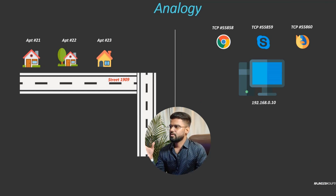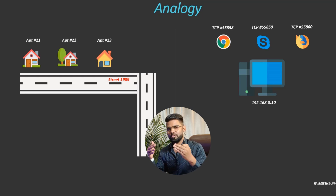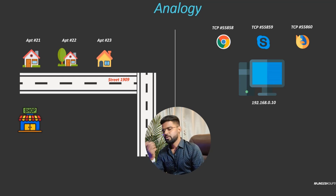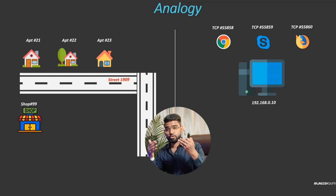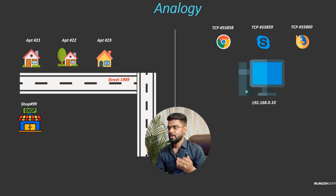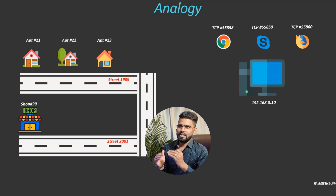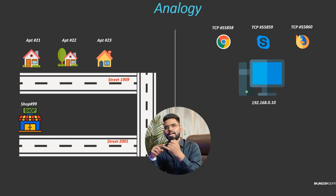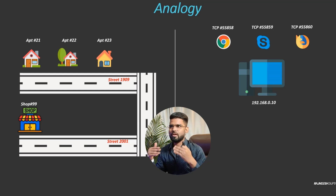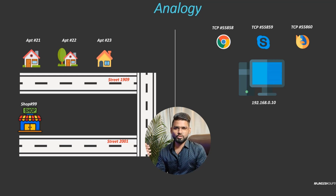Now, as all the apartment members need to go shopping or buy some grocery, they will be making use of the same street. Let's say there's a nearby shop and this shop has got its own number — this shop's number is 99. This shop would be residing on a different street, and maybe that street number is 2001. So you get the analogy: everything in this scenario has got a shop number or apartment number, and will be on a certain street which has its own number.